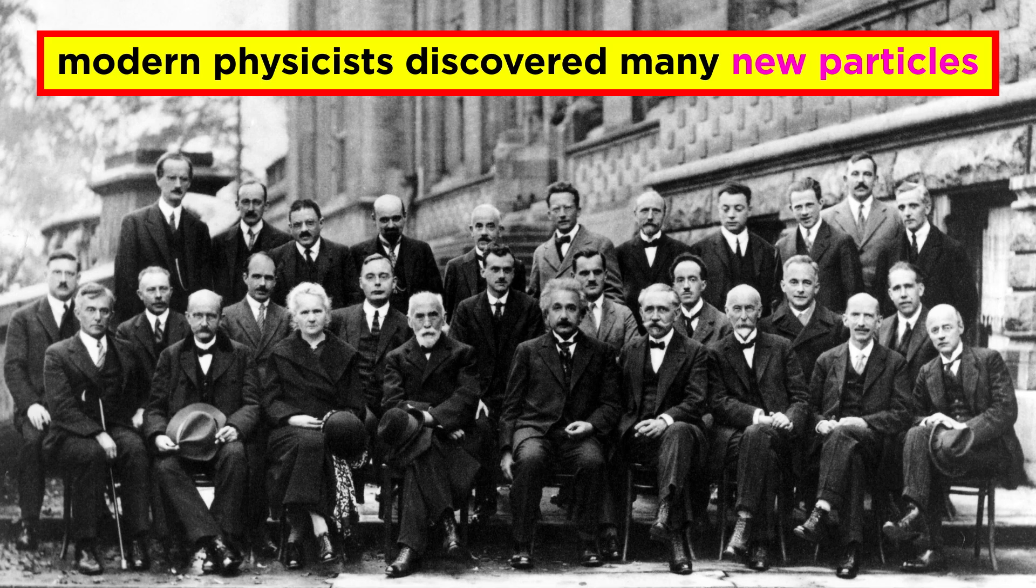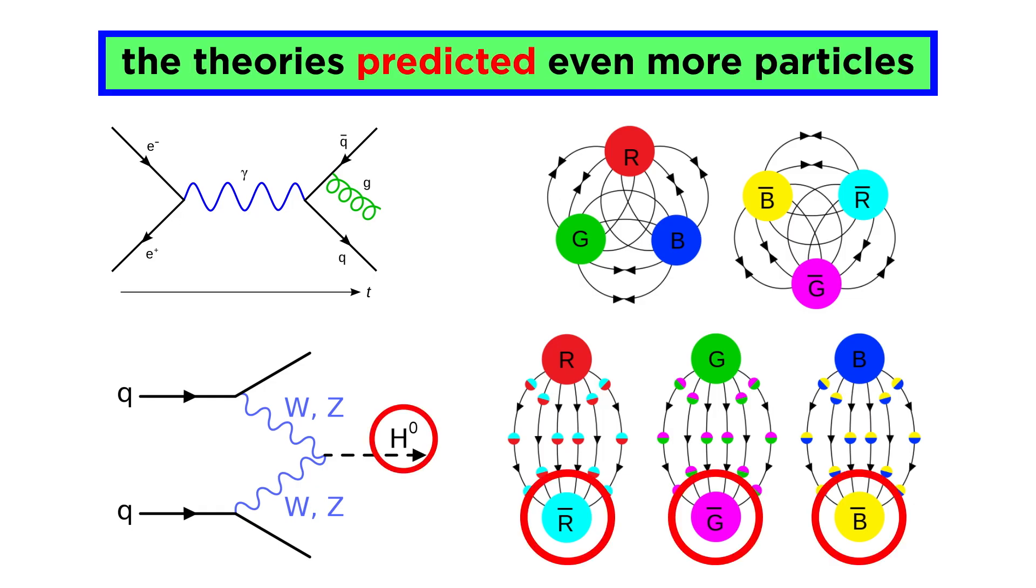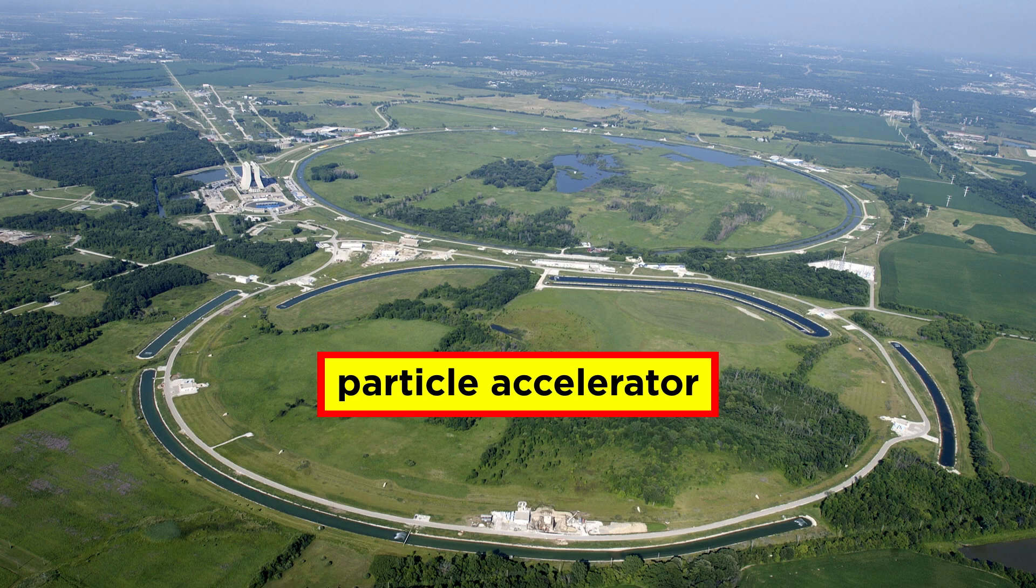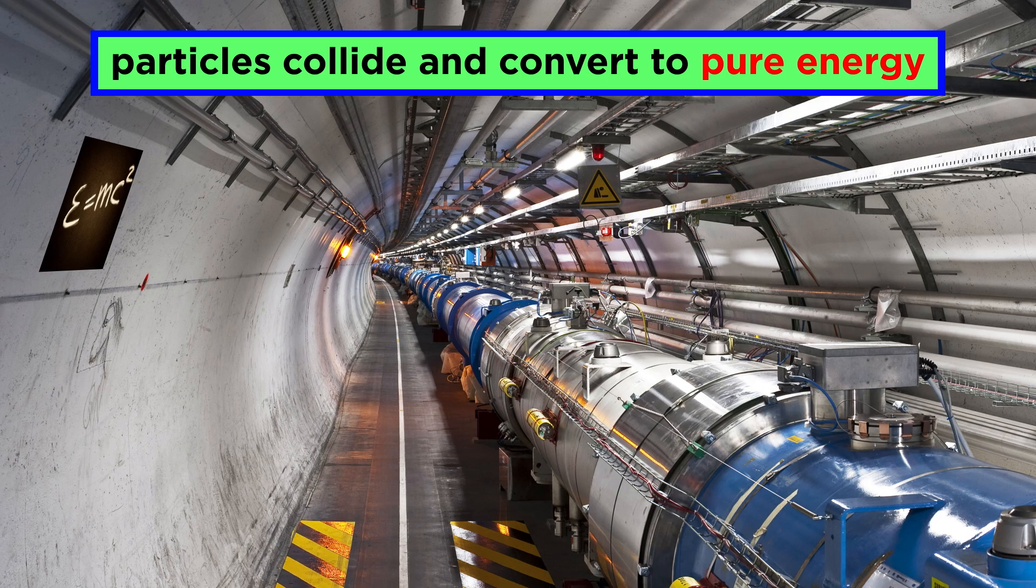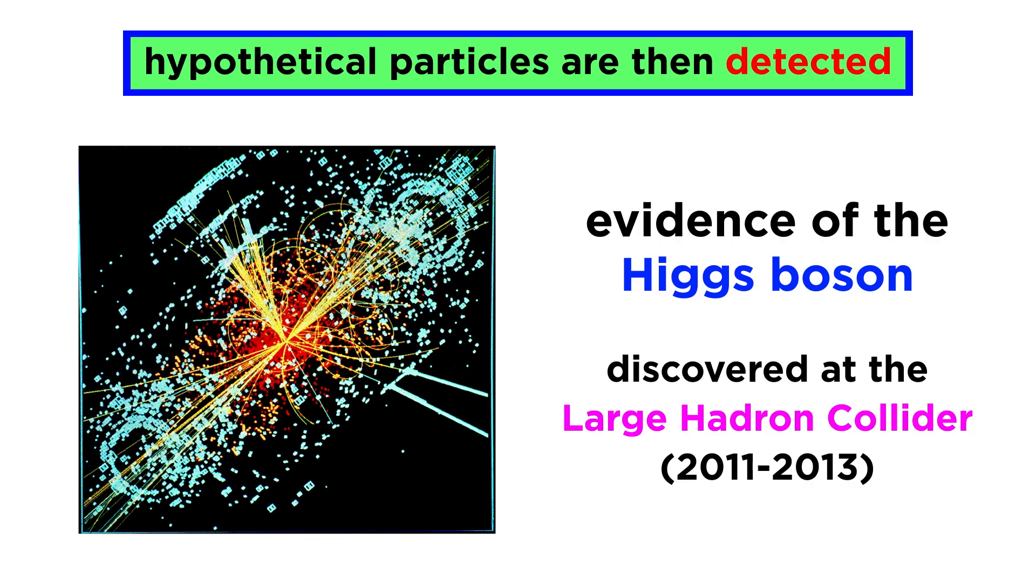The development of quantum theory brought along with it the discovery of completely new particles. New theories had to be developed to describe these particles, and these theories ended up predicting even more particles. Fundamental particles are spotted and confirmed, and the cycle continues.